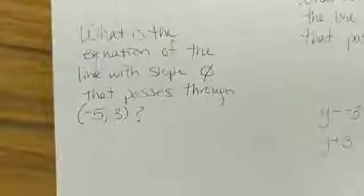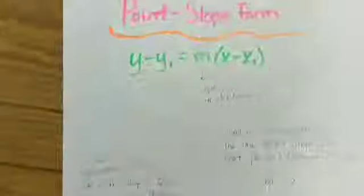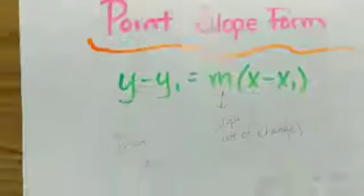Okay, another example. This time we have slope 0. So once again, we're going to use the point slope form formula. And we're going to substitute our values.